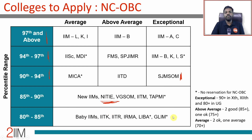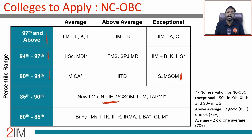After all this discussion, remember there will always be exceptions. Someone may have received a call from IIM Bangalore at 89th or 90th percentile last year — that is an exception. It does not mean that having 92 gives you a good chance of getting a call from IIM Bangalore. An exception does not guarantee a call, and the person may have had a completely different profile that the selection committee wanted to give a chance to. Also, the last cutoff at which a conversion happened matters — and that will be clear three months from now, not today.